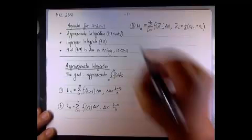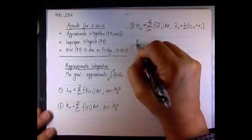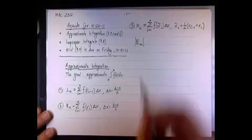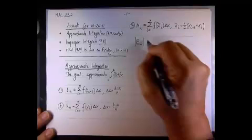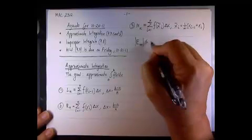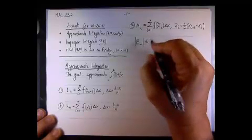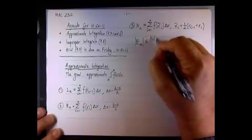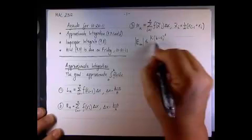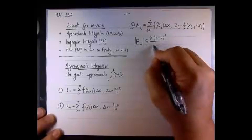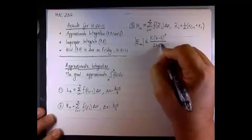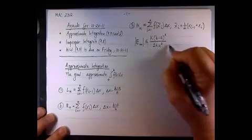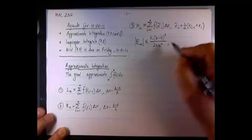Here we discussed how big the error can be - what we call the error bound. We gave it a name, e sub m, the error bound corresponding to this technique, the midpoint, is limited. The biggest value will be k times b minus a cubed over 24 n squared.